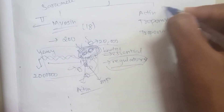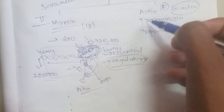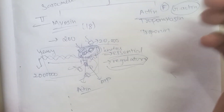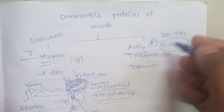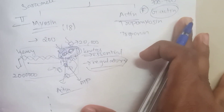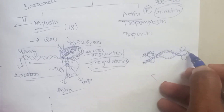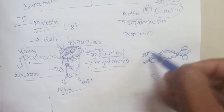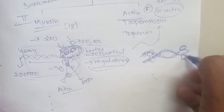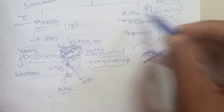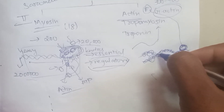Actin exists as G-actin (globular) and F-actin (filamentous). F-actin is formed from G-actin monomers polymerizing together.